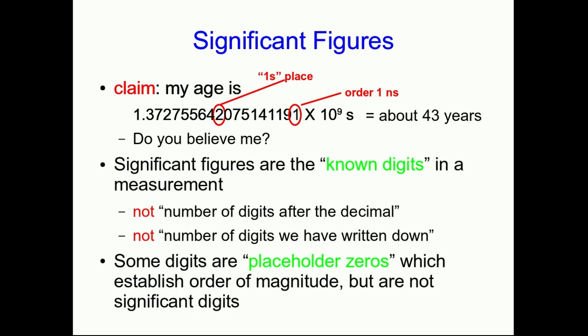And so digits that you simply don't know you shouldn't write, but there are also other digits which are placeholder zeros, which tell you how big the number is, but are not actually digits that are important other than establishing the order of magnitude. And some examples will help you see what I mean by that.